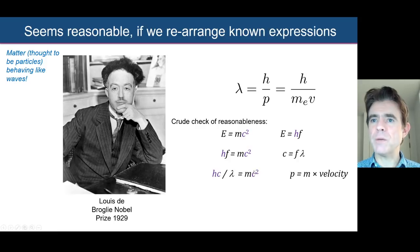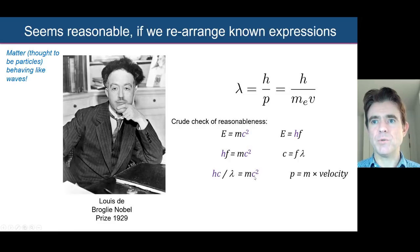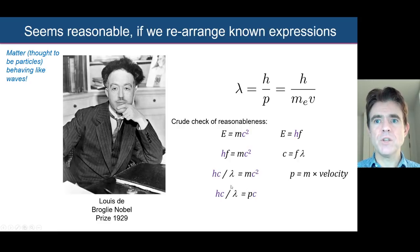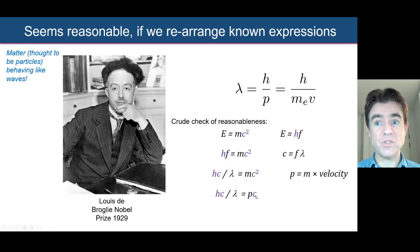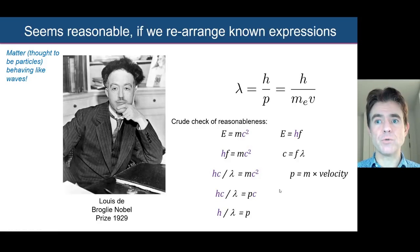We know that c equals frequency times wavelength, so we can substitute for frequency using c divided by lambda — giving us hc divided by lambda equals mc squared. Then we can think of mc squared as mass times a velocity times a velocity. Taking first just the mass times one of the velocities gives us p, so now we have hc over lambda equals p times c. And look at what we've got — exactly de Broglie's relationship: p equals h over lambda, or equivalently lambda equals h over p.